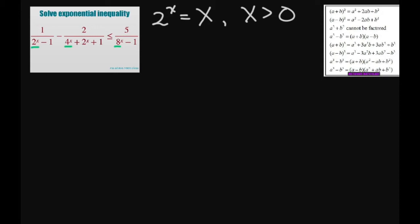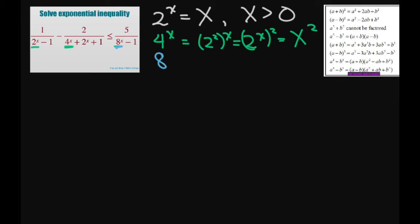Our big X has to be positive because we don't want a fraction — if x was negative, you get a fraction. So looking at 4 to the power of x: that equals 2 squared to the power of x, which equals 2 to the power of 2x, so that equals big X squared using our substitution. And the same for 8 to the power of x: that's 2 cubed to the power of x, equals 2 to the power of 3x, which equals big X cubed.